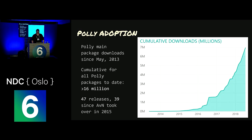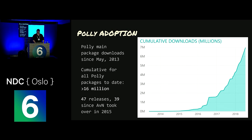These numbers are correct for adoption, though the graph is a little bit out of date. All Polly packages to date: over 16 million downloads, 47 releases, 39 since we took over. So that's quite a trip.